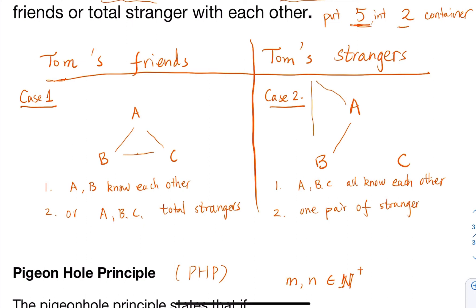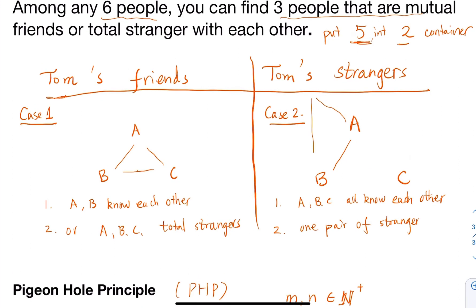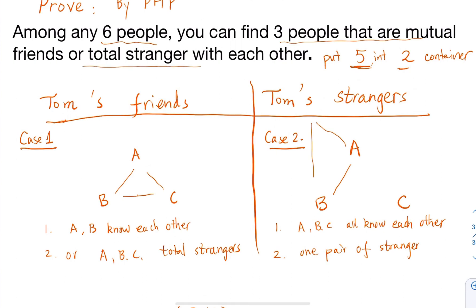So we have proven that no matter how these people are related with each other, we can always find either three friends or three strangers, based on the Pigeonhole Principle. That's it for today, thanks.